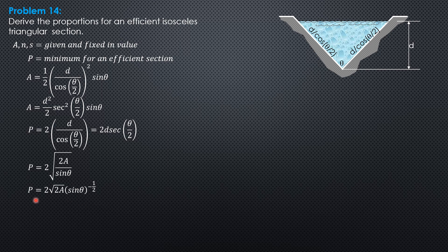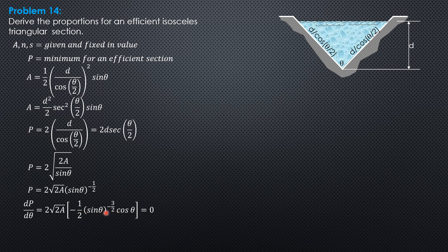Differentiating to minimize the perimeter with respect to theta — since A is constant — we get 2√(2A) · (−1/2) · sin(θ)^(−3/2) · cos(θ) = 0. Setting this equal to zero and simplifying, cos(θ) / sin(θ)^(3/2) = 0, which means cos(θ) = 0. Therefore, theta must be 90 degrees, since cosine of 90° is zero.